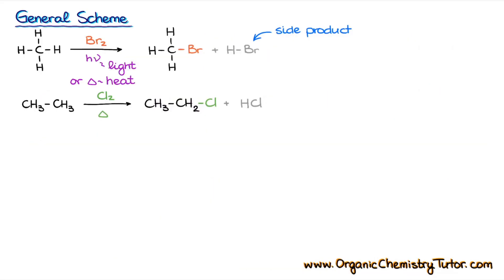Here are a couple of simple examples. In the first case we replace the hydrogen on our methane molecule with a Br atom, and in the second case we're also going to be replacing one of the hydrogens with chlorine. In both cases we also form a side product — HBr in the first case and HCl in the second.